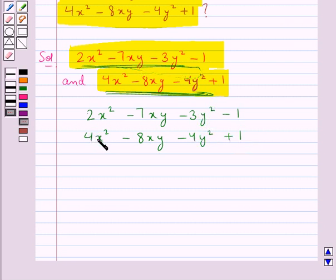Since we need to subtract the second expression from the first expression, we will change the sign of each term in the lower row from plus to minus or from minus to plus. Since the sign for this 4x² is plus, it would be minus now. Here it would be plus, here also plus, and here it would be minus. Now with these new signs of the terms of the lower row, we would add column-wise.